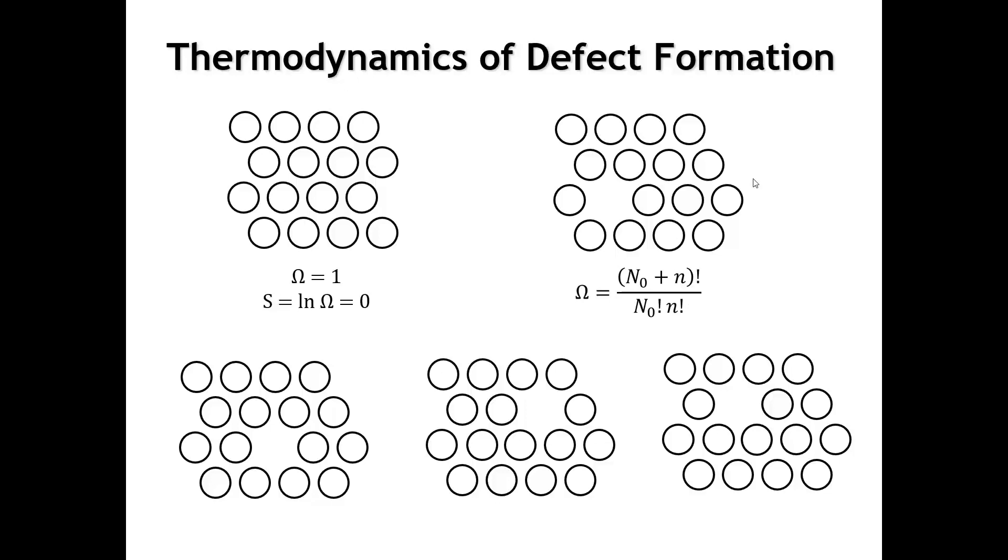And the formula for what the number of configurations is, is going to be given here. It's the number of lattice sites in the perfect crystal, plus the number of, let's say, vacancies that are created by moving an atom to the surface, factorial, divided by n naught factorial times small n factorial. So if we have 16 atoms in this crystal, then the number of configurations once we have one vacancy is going to be 17 factorial divided by 16 factorial times 1 factorial. And that's going to be 17, right? There are 17 different places that I could put that vacancy.